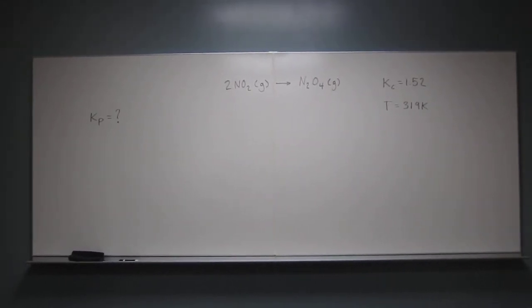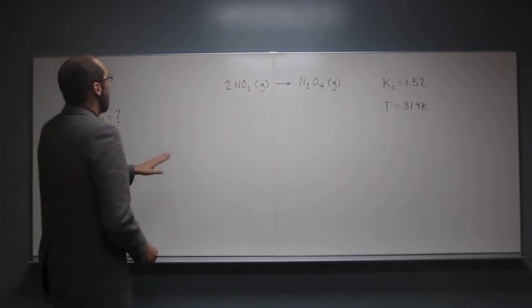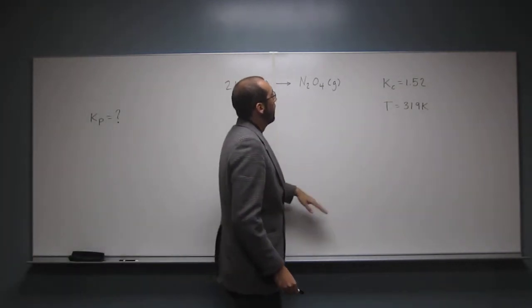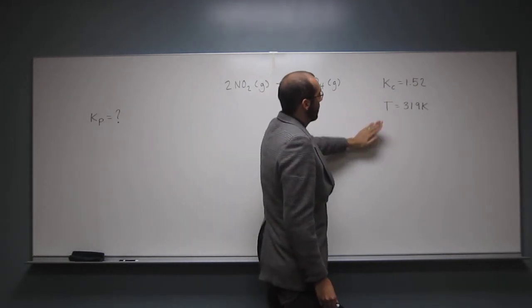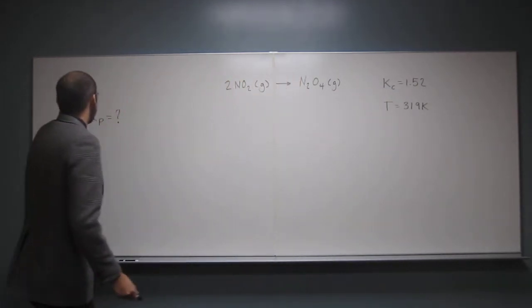OK, so let's start off the day with this question. The value for Kc for the reaction 2NO₂ goes to N₂O₄ is 1.52 at 319 Kelvin. What is the value of Kp at this temperature for this reaction? So this is the reaction here that's given to us. It gives us the Kc and the temperature of the reaction, and it wants us to find the Kp.